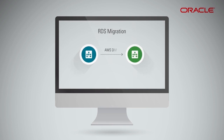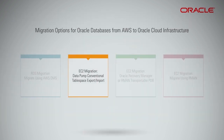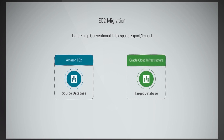For RDS Migration with AWS DMS, you can copy the full schema from the source database to the target database. You can also replicate all the changes from the source database to the target, to keep the tables and data synchronized with the source until you decide to cut over to the database in Oracle Cloud Infrastructure. Data Pump is an Oracle utility that enables high-speed data transfer from one database to another. Use Data Pump to move an entire schema or multiple schemas from a source database that resides in Amazon EC2 to a database created in the database service on Oracle Cloud Infrastructure.